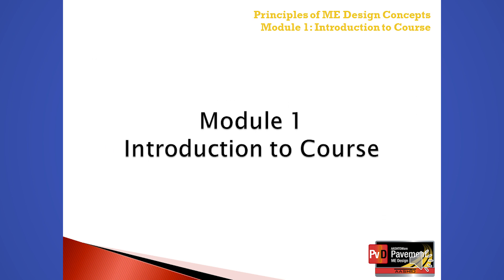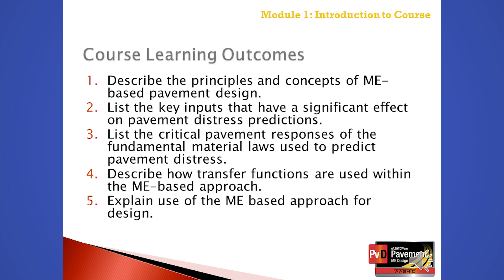Module one is the introduction to the course. There are five overall course objectives or learning outcomes. The first learning outcome is to describe the principles and concepts of mechanistic empirical based pavement designs, covered under module two of segment one. The second learning outcome is to list the key inputs that have a significant effect on pavement distress predictions, covered under module four of segment one.